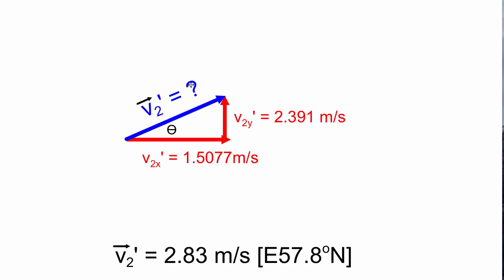We know the magnitude of the hypotenuse. We now solved for the angle. Our final answer is going to be rounded to 3 sig digs, 2.83 meters per second. This vector is denoted as east but then it's 57.8 degrees towards the north. So v2 prime is 2.83 meters per second east 57.8 degrees north.